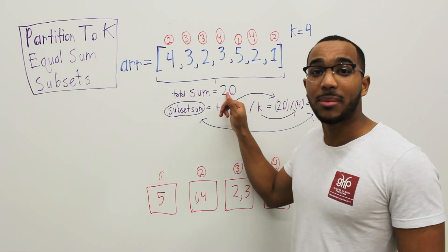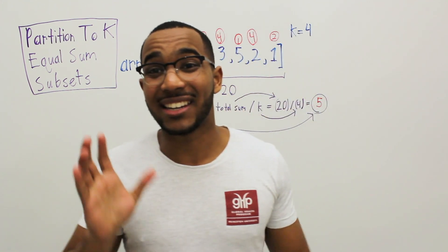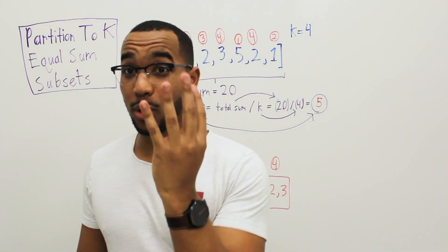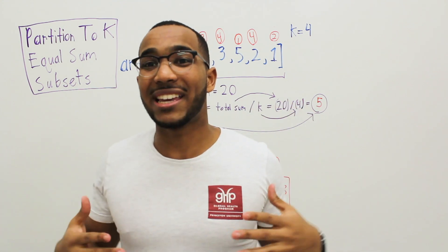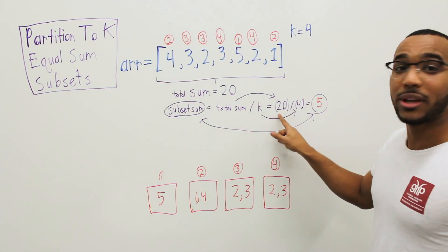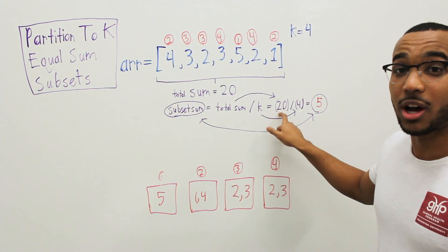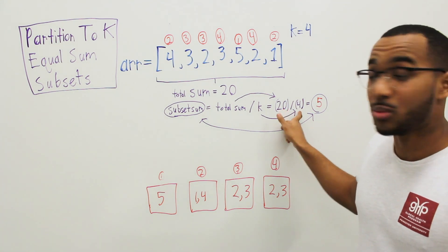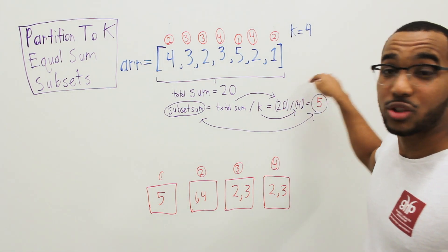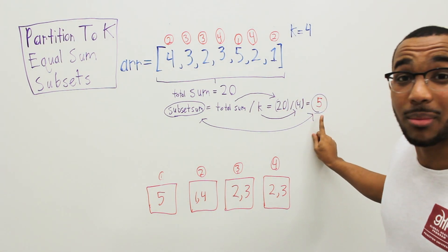What is our total sum? Our total sum is 20. Each bucket needs to be an equivalent sum. 4 buckets, a total sum of 20. Each of our buckets are going to have 20, our total sum divided by the number of buckets we need to make. We need to make 4 buckets with a sum of 5.